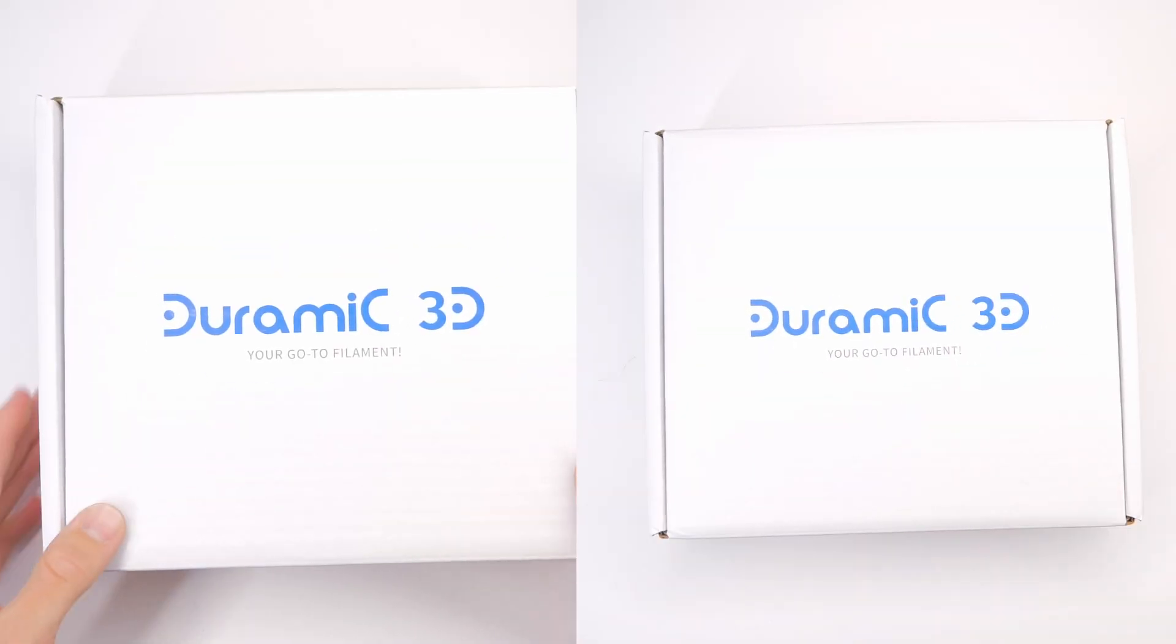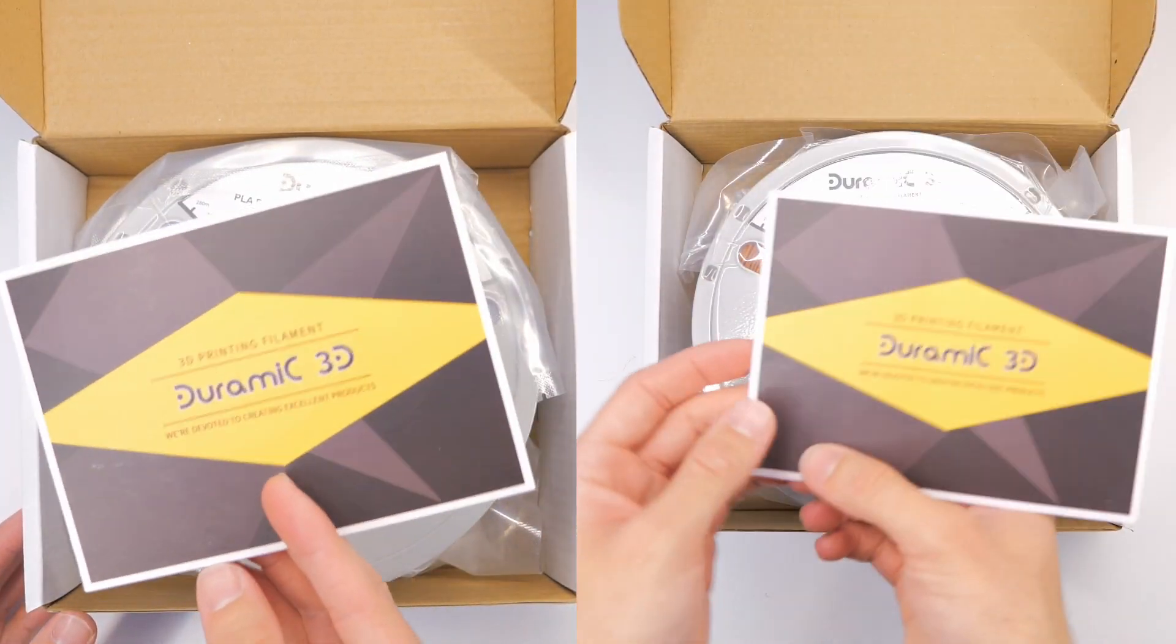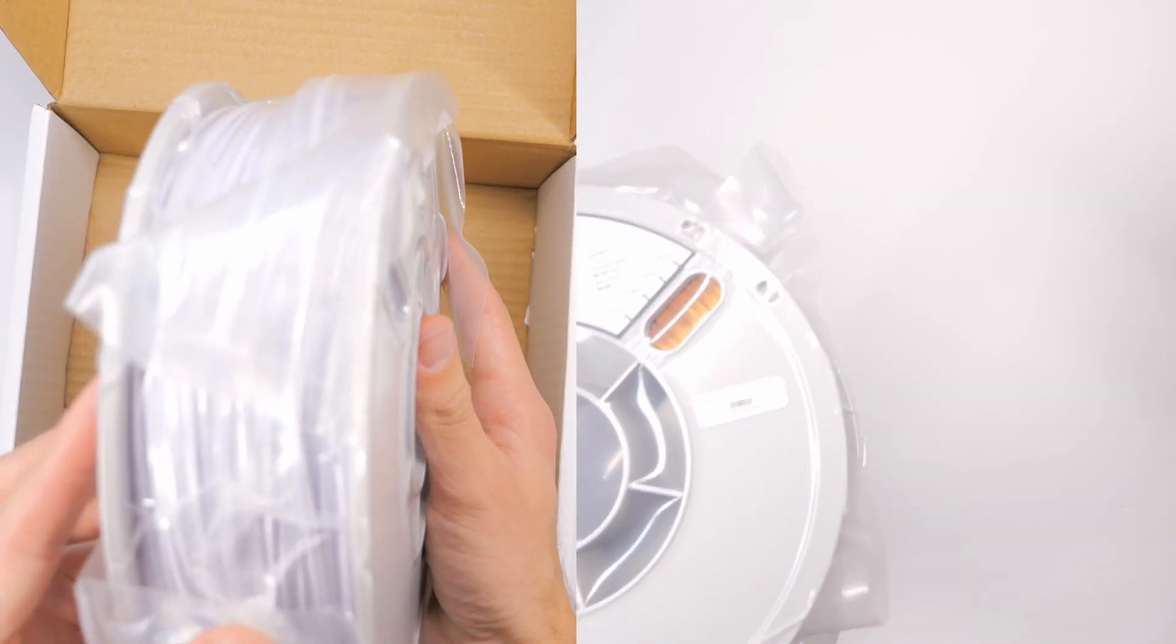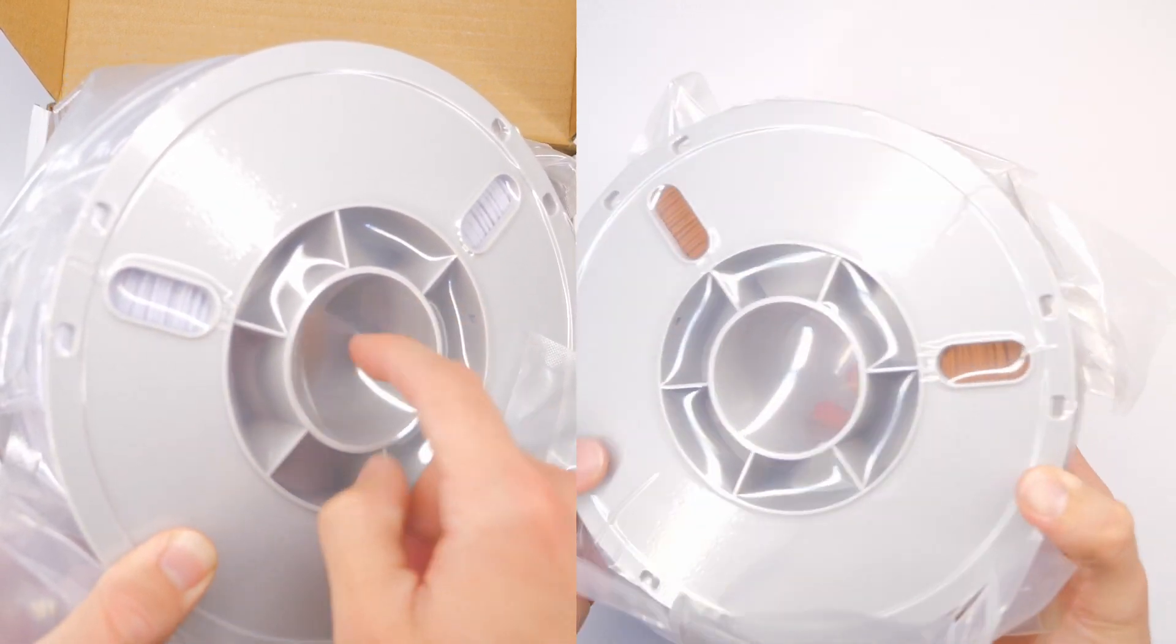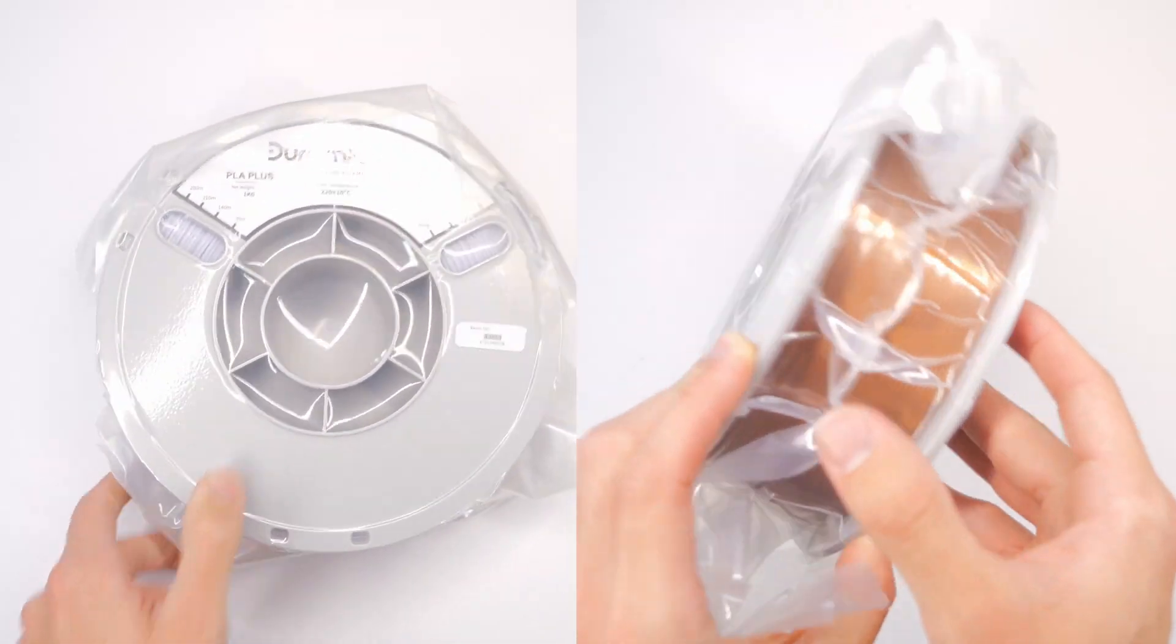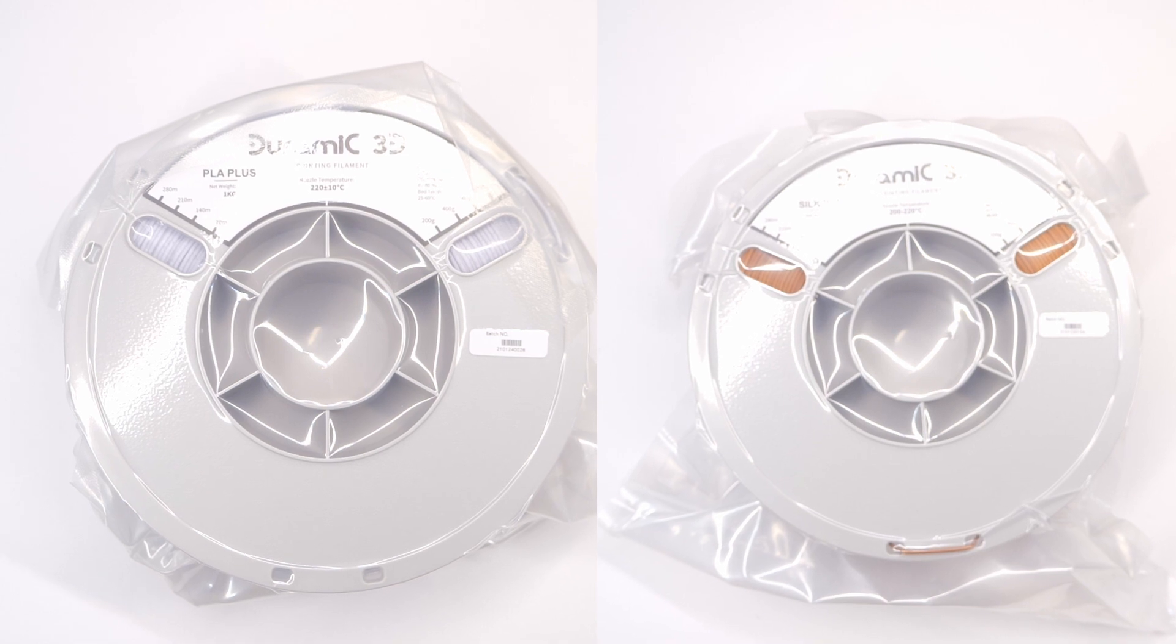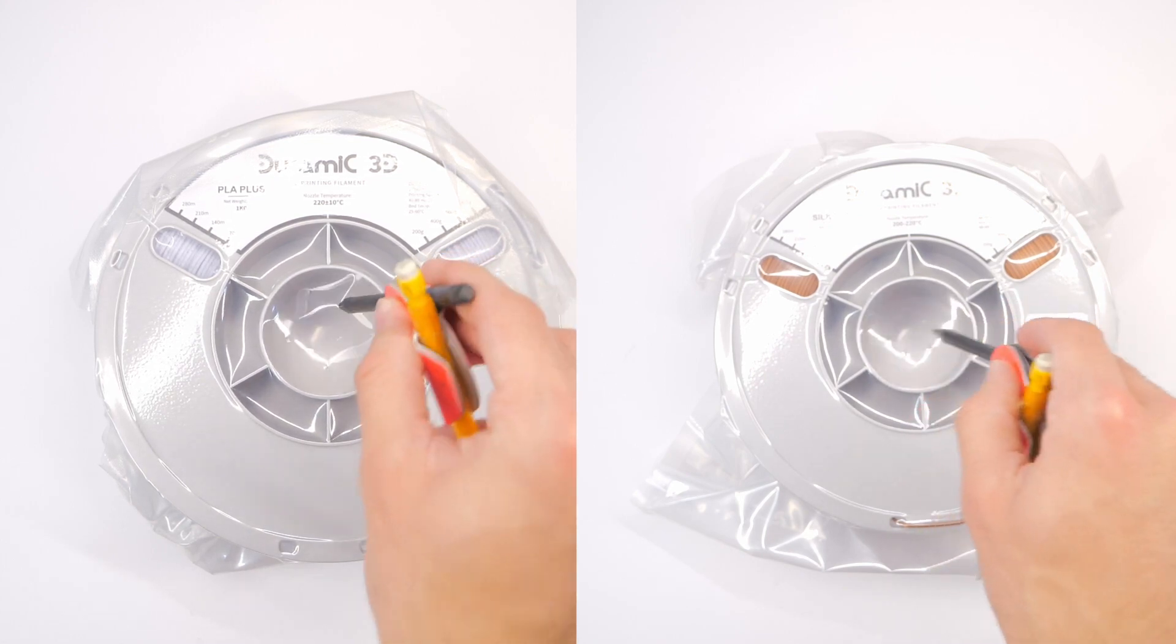Now, let's take a look at the unboxing of these filaments. Normally that wouldn't really matter, but it does in this case because how the filaments get shipped can be a big factor in how well they print and especially keeping out moisture. So these come nicely packaged and they are both vacuum sealed in plastic bags, which is very nice. And this is great because it keeps the moisture out and you get to have the satisfying experience of undoing that vacuum seal. Oh yeah, that's the good stuff.